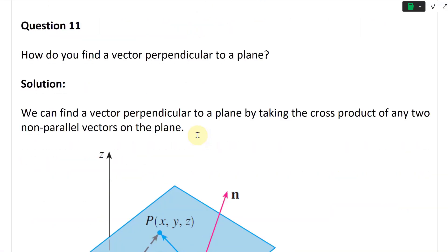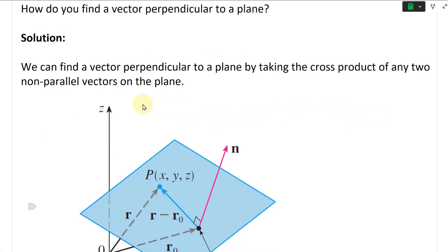All right, and the solution: we can find a vector perpendicular to a plane by taking the cross product of any two non-parallel vectors on the plane.